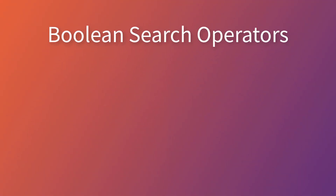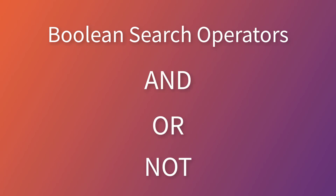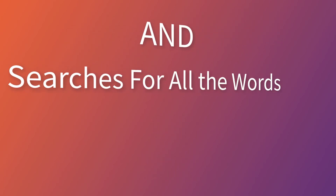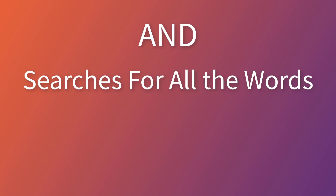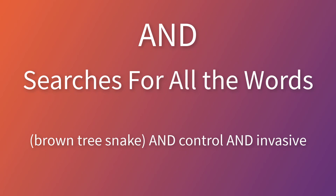Now we can use Boolean search operators to combine our keywords and create effective search queries. The three main operators are AND, OR, and NOT. It's best practice to capitalize the entire operator so the search engine recognizes it as a keyword operator. AND combines terms and all the search results will have each keyword. Your search might look like: brown tree snake AND control AND invasive.